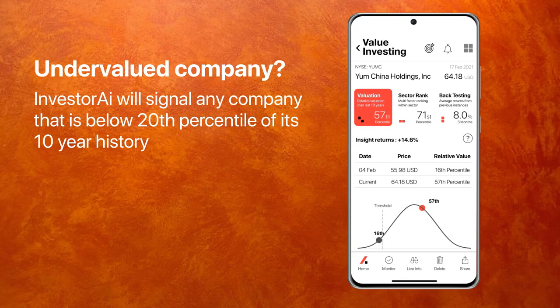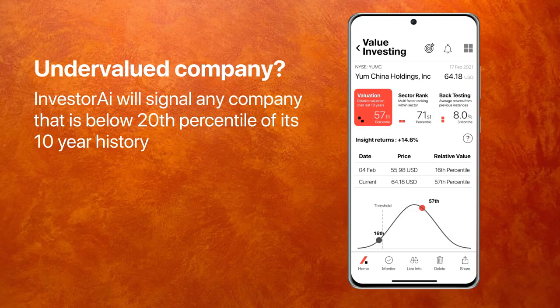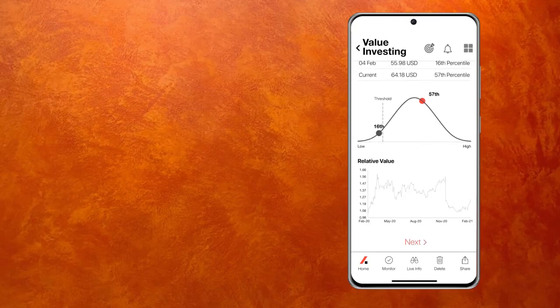It's telling me that this company is trading at $64 and currently at the 57th percentile of its 10-year trading history. Now, this is not undervalued — and you would be right — because this insight was generated on the 4th of February when the price was $55, and at that time it was at the 16th percentile. We have a threshold of the 20th percentile, below which we consider a company undervalued, and that's what triggered the signal. Since then it's gone up, and that's a pretty fantastic price growth in just two weeks. You can see how the signal has moved over time, and the relative value chart suggests there is some more room for this to go.